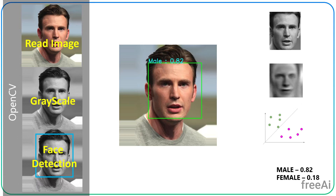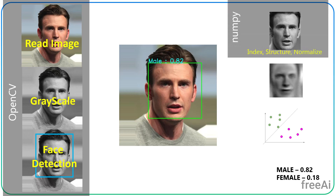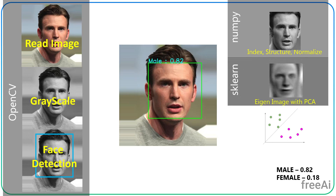For that, we will crop and scale the image to make it structured, and then normalize the image using the NumPy library. With the normalized image, we calculate and compute eigenvalues using Principal Component Analysis (PCA), with the help of the scikit-learn library.